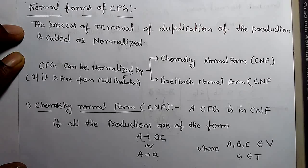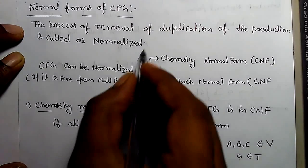Hi, today we are going to learn normal form. The process of removal of duplication of the production is called normalized CFG.